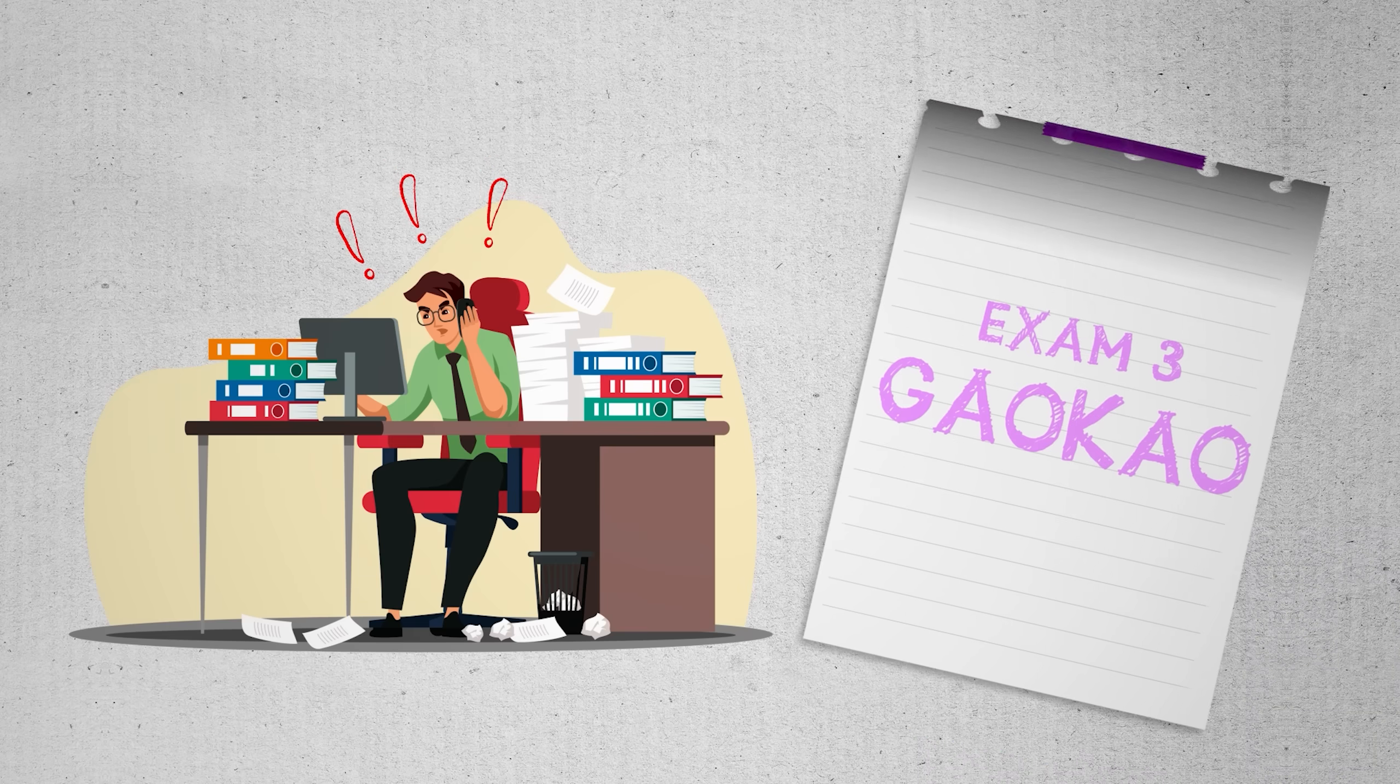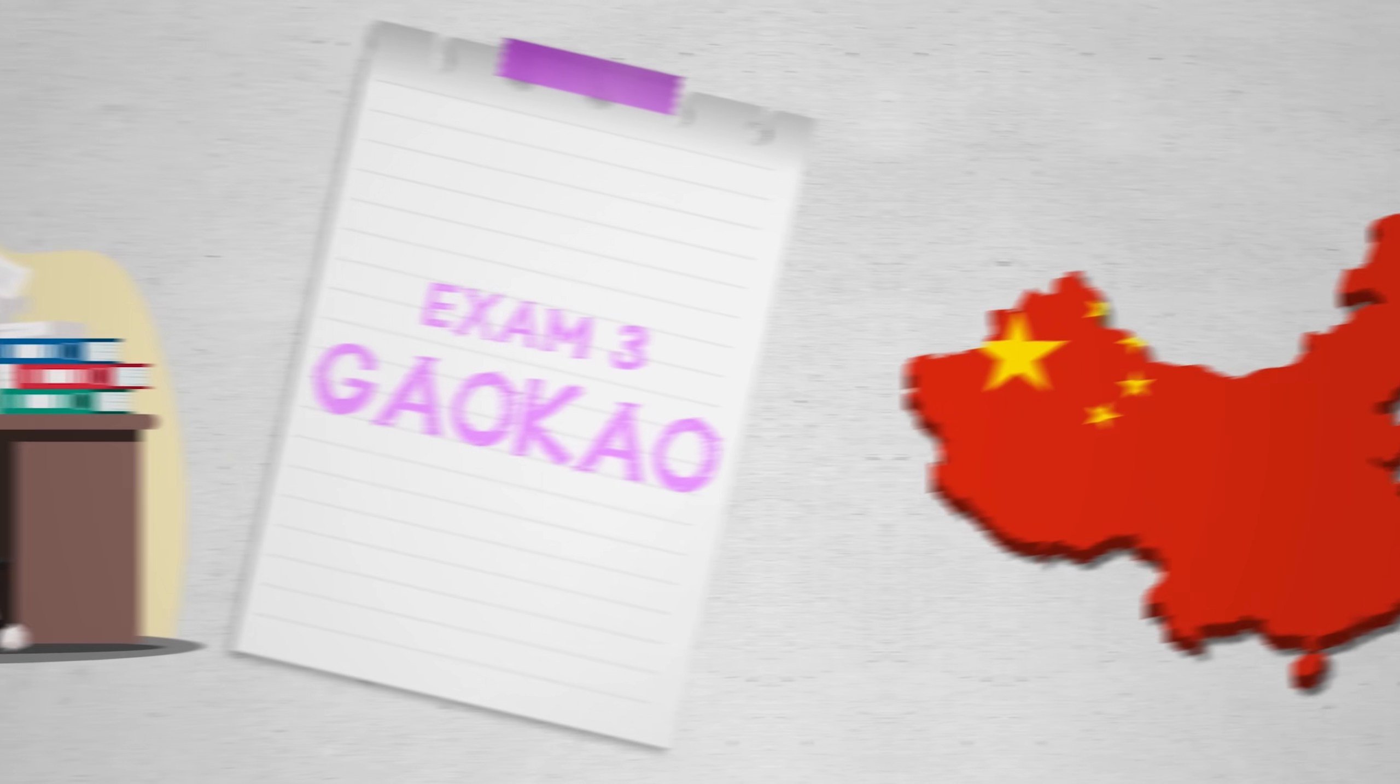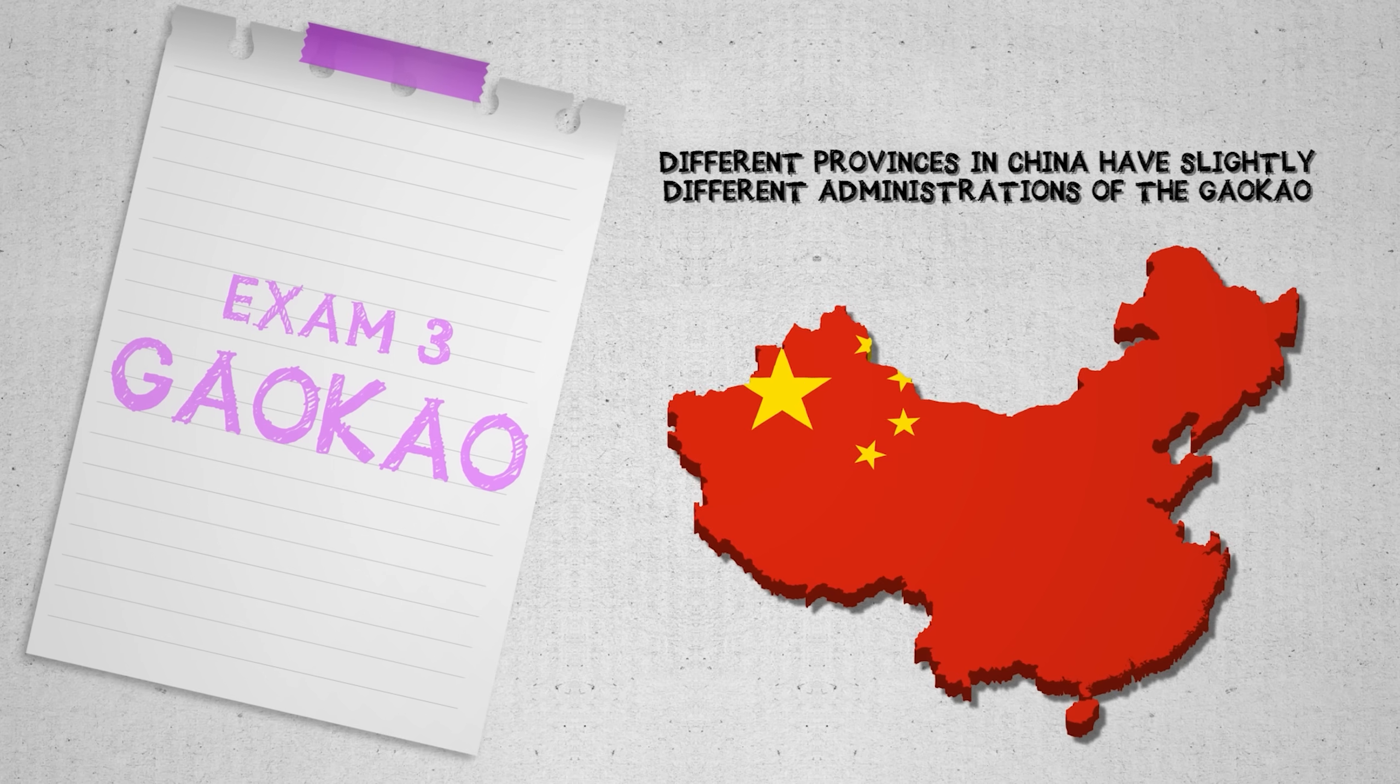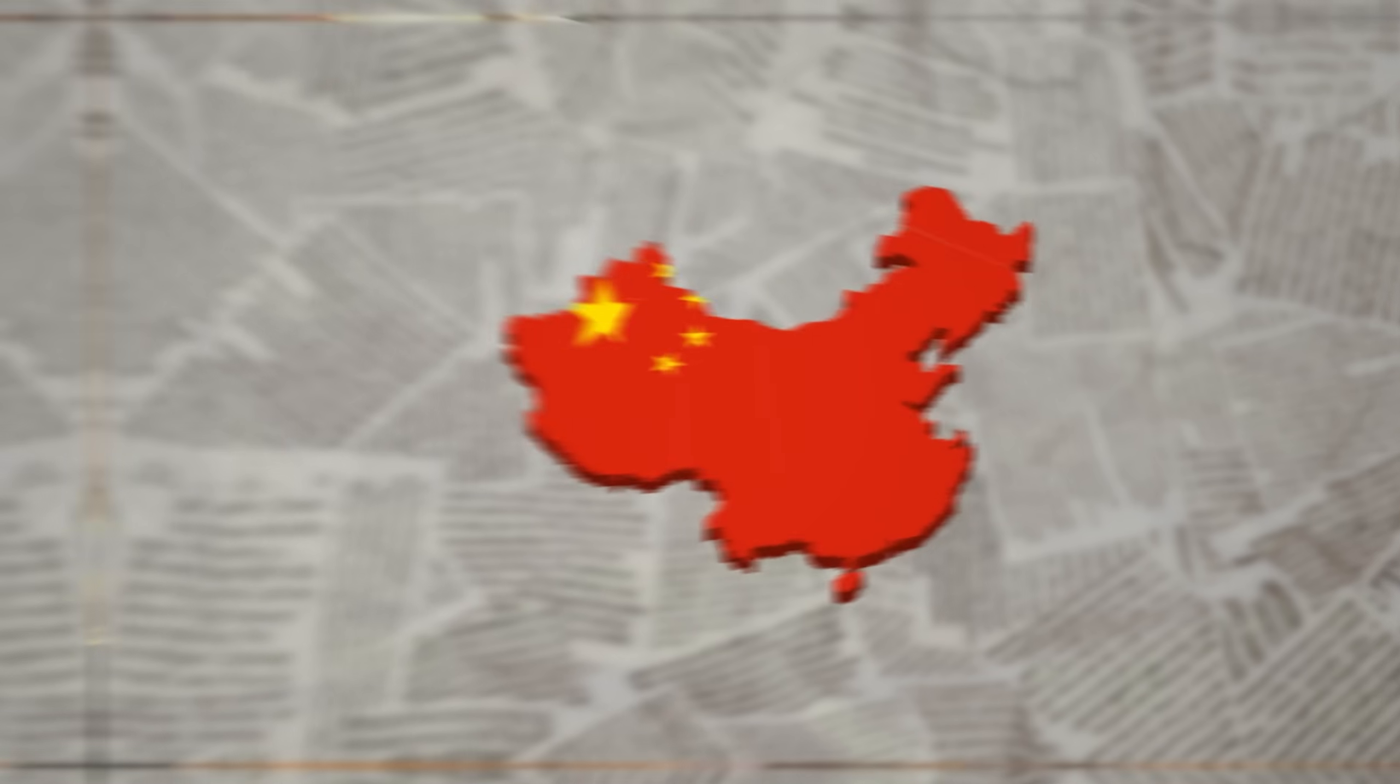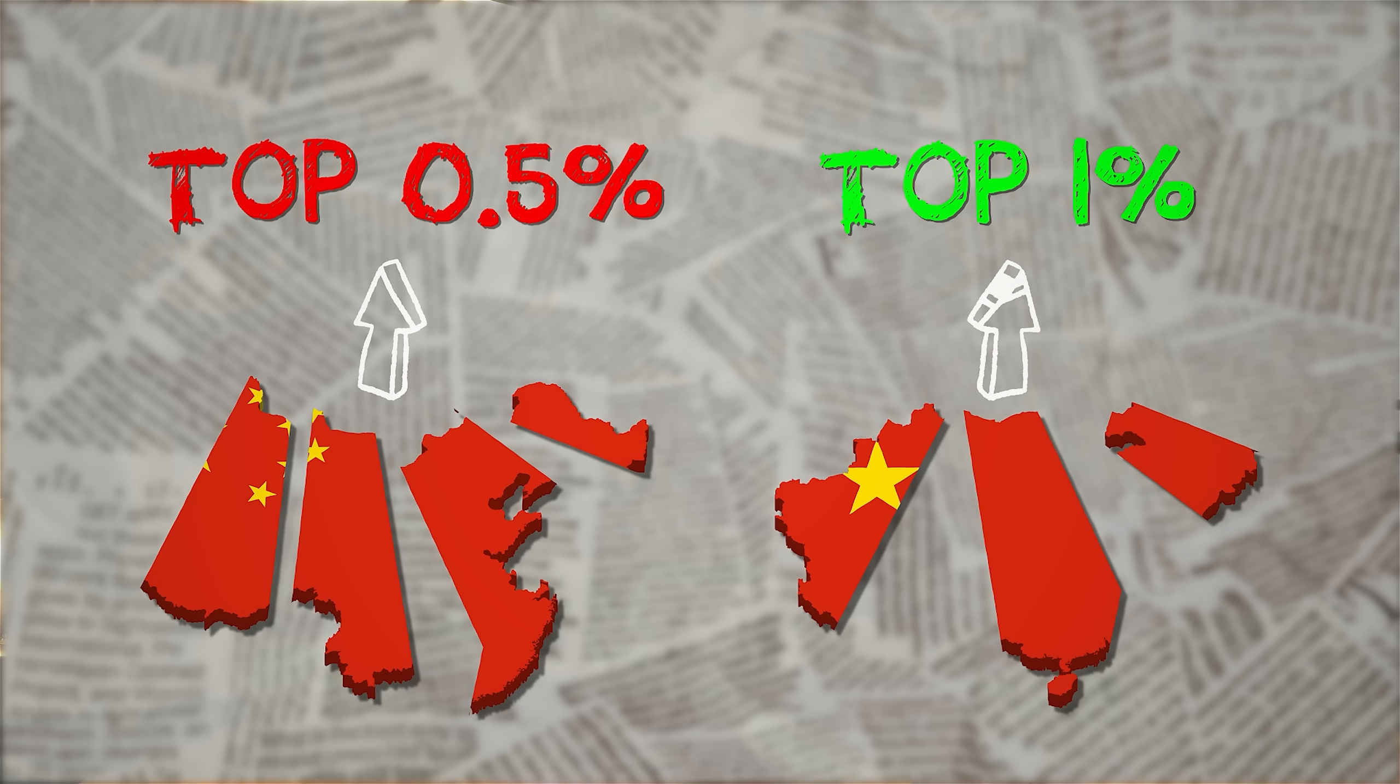So how well do you need to do on the Gaokao to get into China's top universities? Well, it varies by province, because different provinces in China have slightly different administrations of the Gaokao. To get into schools like Peking, which is often touted as the Harvard of China, students in some provinces need a score in the top 1% and students in other provinces need a score in the top 0.5%. So it's not a surprise that students spend years prepping for this exam.